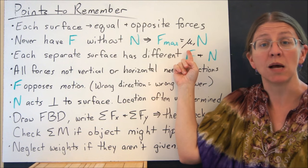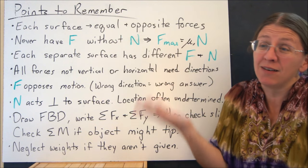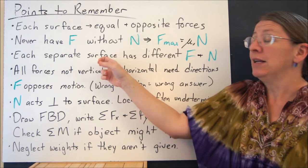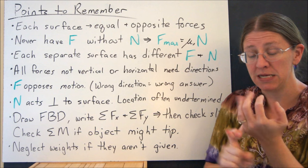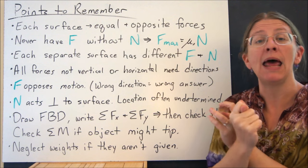Because after all, F max is equal to mu times N. If you don't have an N, you don't have an F. Each separate surface has to have unique labels. So I had NB, NW, and NF.